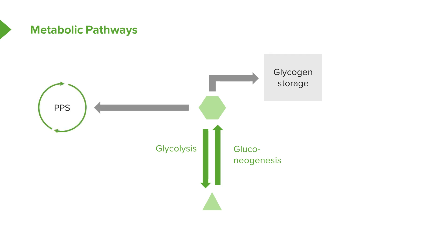Glucose is also sent over to something called the pentose phosphate shunt. The pentose phosphate shunt is responsible for making NADPH, and there is a disorder, G6PD, which can cause problems with creating NADPH. Because that disease's symptoms are almost entirely limited to red blood cells, I want to talk about G6PD during the heme lectures, which you'll see later.